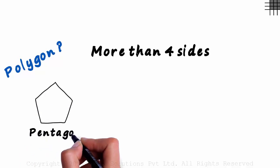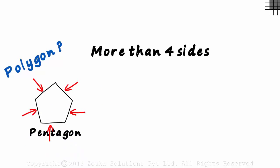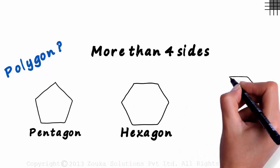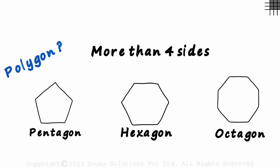It's called a pentagon since it has five sides. Or maybe a six-sided figure which is called a hexagon. Or maybe even an eight-sided figure which is an octagon.